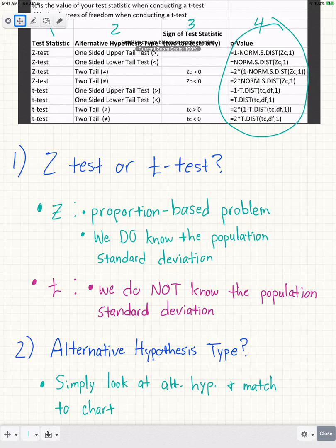I'll put the link in the description for that. After you have your hypothesis set up, you're going to look at your alternative hypothesis and match it to the chart. If the alternative hypothesis says greater than, that means it's a one-sided upper-tail test.